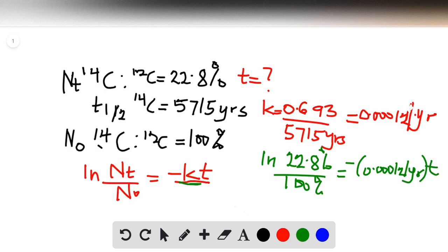Times time, so t then becomes ln of 22.8 percent. The percentages cancel out, so we don't need the percentages.